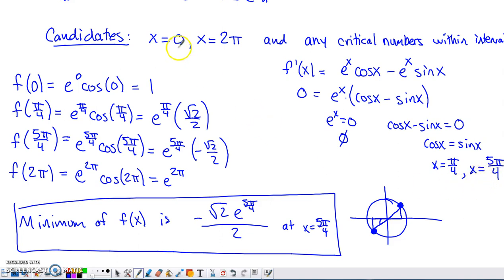So if my candidates are 0, 2 pi, and then these two values, I just need to compare the function value at each of them. I evaluate the function at 0, I get 1. I evaluate the function at pi by 4, I get e to the pi by 4 times square root of 2 over 2. You can use some 45-45-90 ratios to determine that the cosine of pi by 4 is square root of 2 over 2.